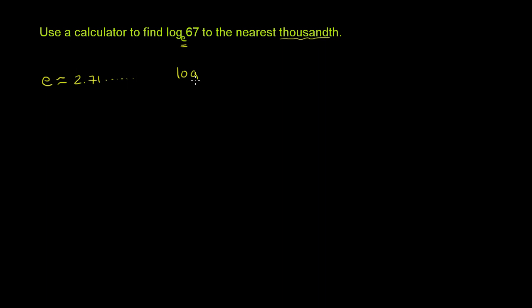So you could view log base e of 67. You might say, what does e mean? E is just a number, just like pi is just a number. So this is really the same thing as saying log base 2.71 and all the digits that keep going forever and never repeat, of 67. What power do I have to raise e to to get to 67? Another way of saying that is if this equals x, you're saying e to the x equals 67. We need to figure out what x is.